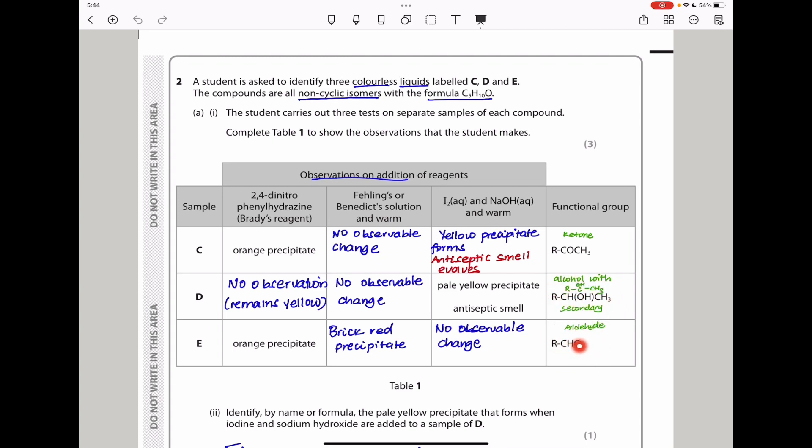C and E should give a positive test with Brady's reagent because both of them are carbonyl compounds. C is a carbonyl, the orange precipitate forms shows it's a carbonyl. And because this is a ketone, it should have no observable change with Fehling's or Benedict's solution because this is only done by aldehydes among the carbonyl compounds. And then iodine with sodium hydroxide here, because this has a terminal methyl group. This is a methyl group at the end that is attached to a carbonyl carbon. So that is what we call a terminal methyl group in this case. Because this has that group, it should be able to give a positive test with iodine and sodium hydroxide, and that positive test is yellow precipitate or an antiseptic smell.